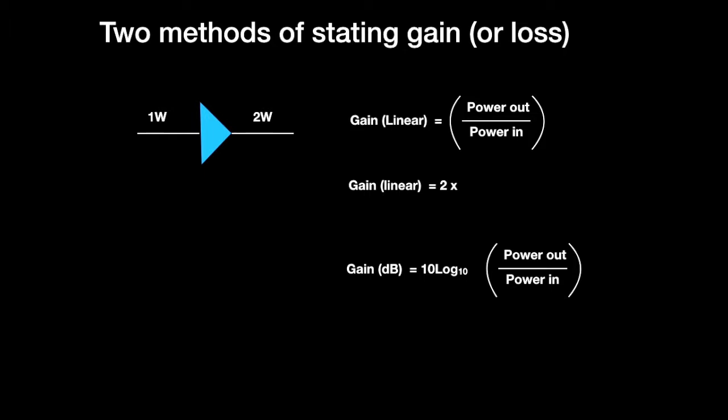In the RSGB syllabus, I think we only look at the gain for voltages and not currents, but they are in fact the same. So gain in dB for power equals 10 log 10, power out over power in. In this case, if we work that out, that would be 3 decibels or 3 dB.